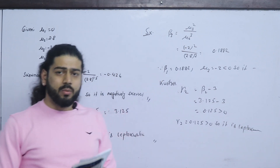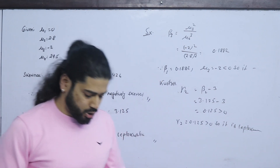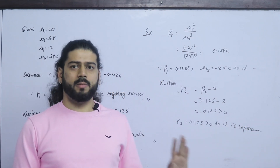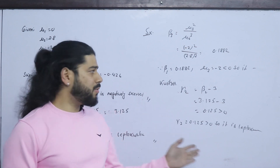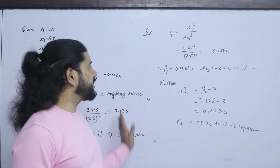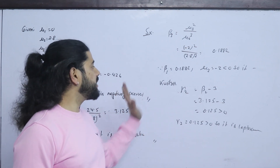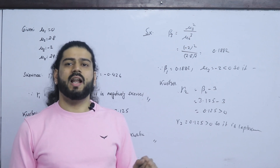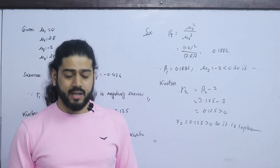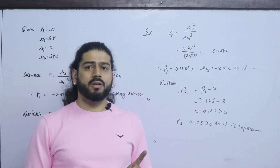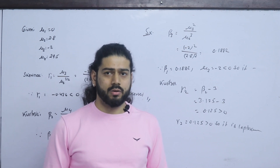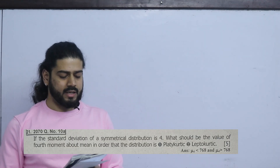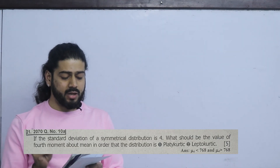That's how you measure the data — beta 1 and gamma 1 measure skewness; beta 2 and gamma 2 measure kurtosis. That's how you measure it.